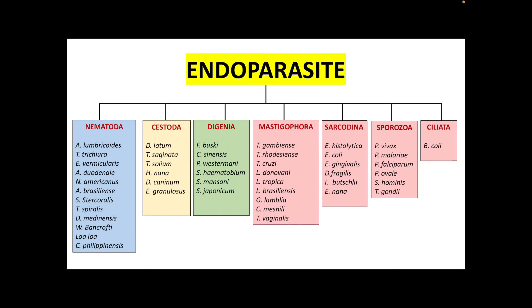This shows the summary of the classifications of the endoparasites we are to discuss in the succeeding sessions: Nematoda, Cestoda, Digenea, Mastigophora, Sarcodina, Sporozoa, and Ciliata. That ends my discussion. Thank you so much.